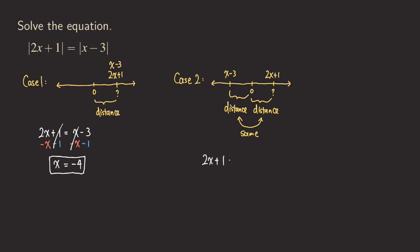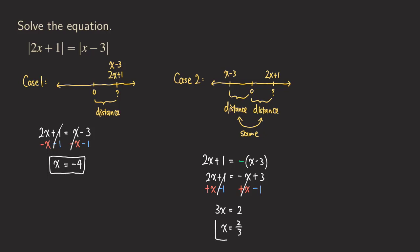We set up the equation: two x plus one is equal to the negative of x minus three, because they are opposite in sign. Solving this equation — combining like terms — the left side gives three x, and the right side gives three minus one, which is two. Dividing both sides by three, we get x equals two over three. That is the second answer.